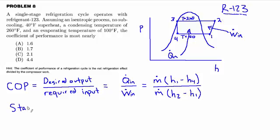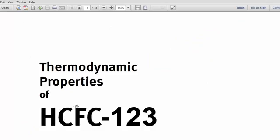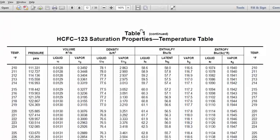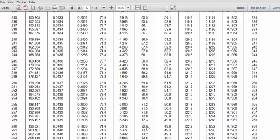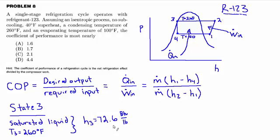It's worth mentioning this was in the six-minute solutions—this would be a hard problem to knock out in six minutes just because of having to go around the cycle. I'm going to start with state 3. At state 3, we know it's a saturated liquid and we know the temperature is 260°F. From those two facts, we can find the enthalpy. Here we have the saturation properties. If we jump down to 260°F, we can jump over to h_f, the enthalpy of a saturated liquid: 72.6 BTU per pound.